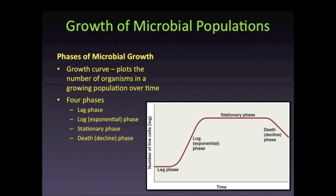Bacterial growth can be assessed using a bacterial growth curve. To do this, a sample of bacteria is introduced to a liquid media and the population is counted at intervals. The information is then represented in a graph that shows bacterial growth over time. There are four distinct phases that may be observed on a bacterial growth curve.